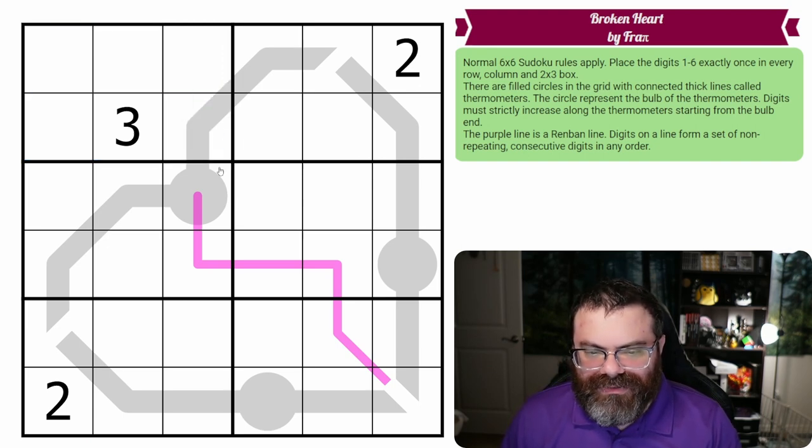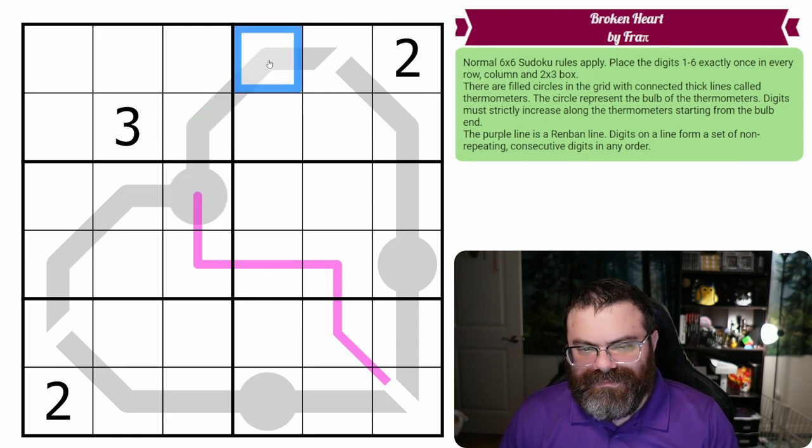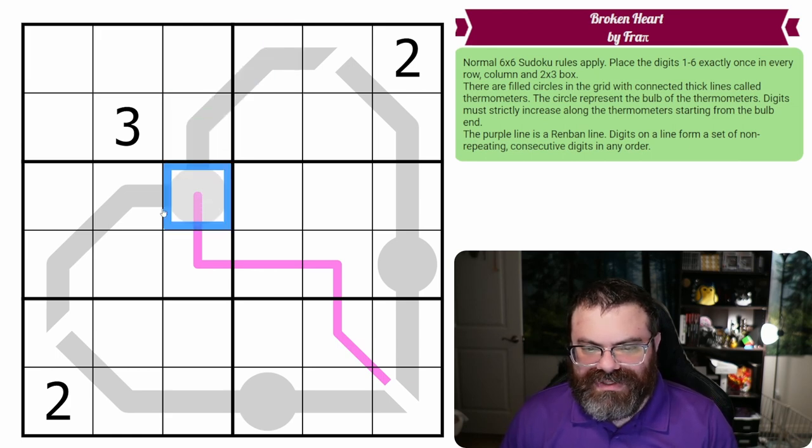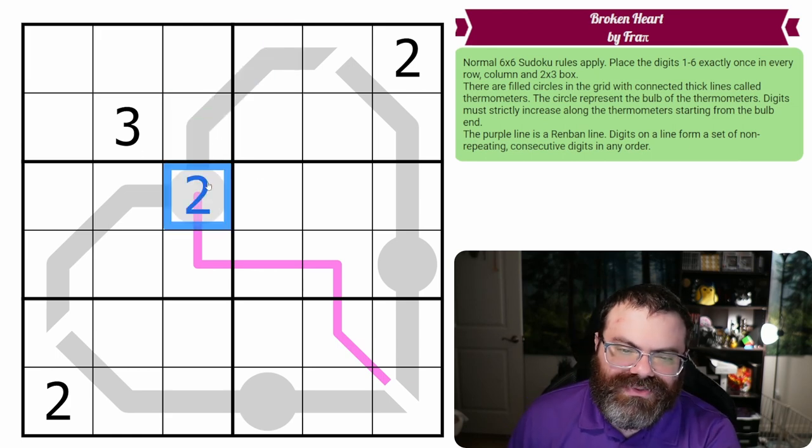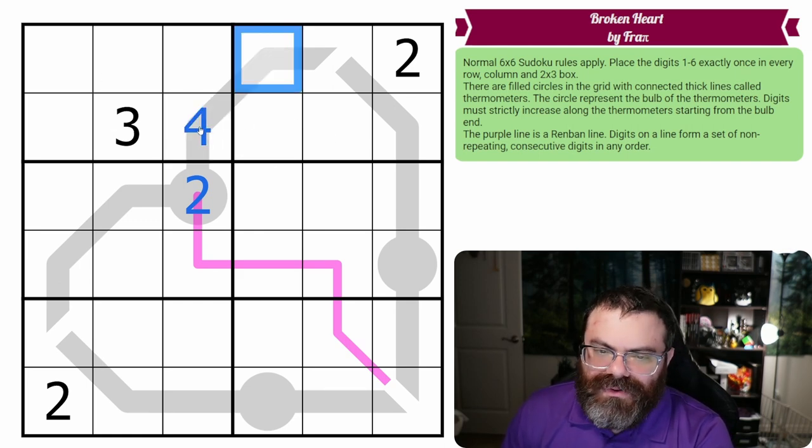We also have thermometers in the grid. Thermometers start with a bulb, which are the circles in the grid, and then there's a thick line coming out of the bulb. That means digits have to increase from the bulb end. So let's say we put a 2 here, this has to be bigger than 2, so maybe it could be a 4.